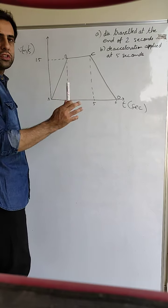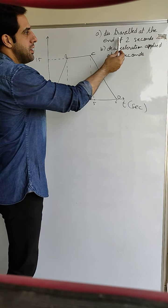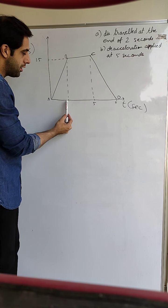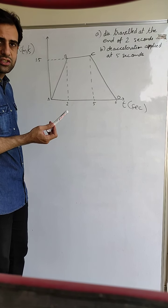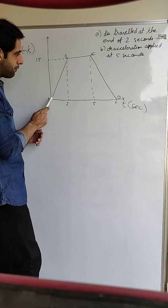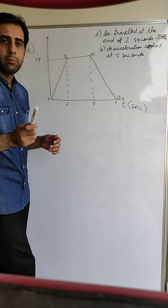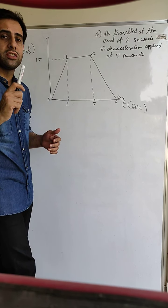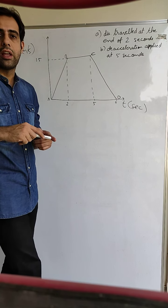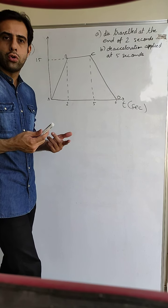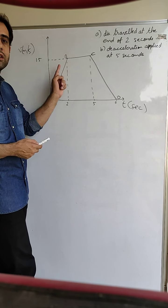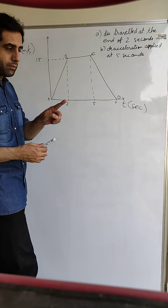Two questions are asked. First: what is the distance traveled at the end of two seconds — from this point to this point. We have to find the distance traveled. We can see that velocity is increasing. As I told you in previous videos, if velocity is increasing it is always due to acceleration. Since it is a straight line, the velocity is increasing with uniform acceleration.